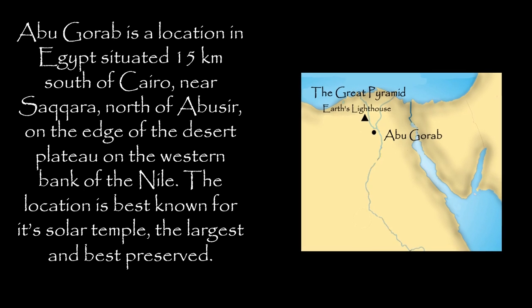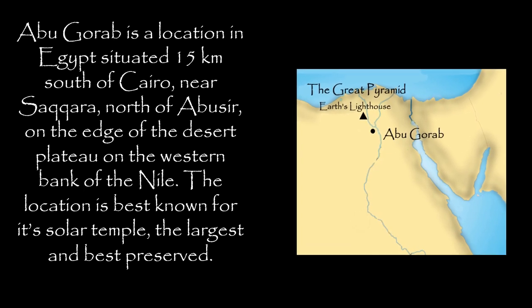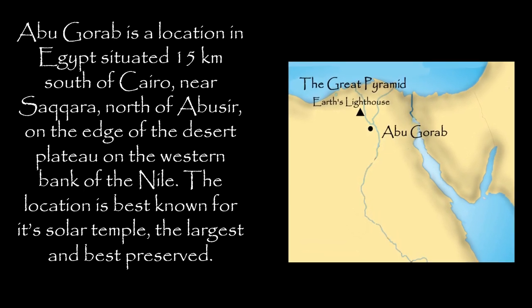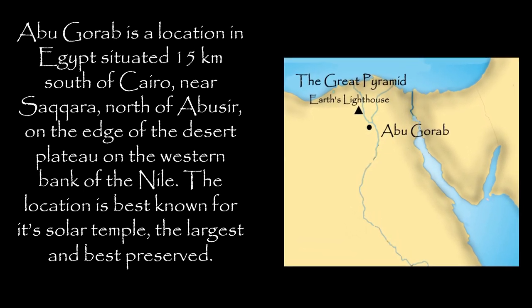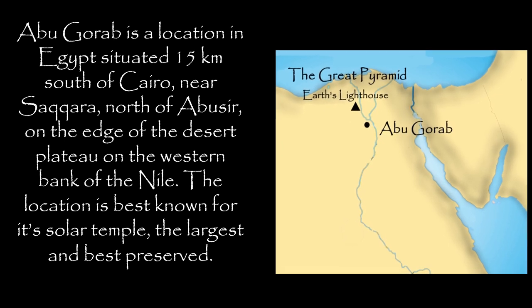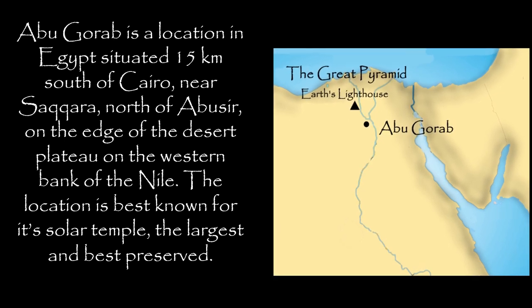Abu Gurab is located in Egypt, situated 15 kilometers south of Cairo, near Saqqara, north of Abusir, on the edge of the desert plateau on the western bank of the Nile. The location is best known for its solar temple, the largest and best preserved.